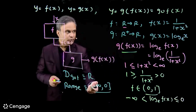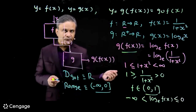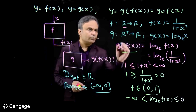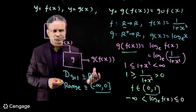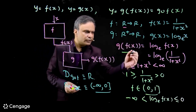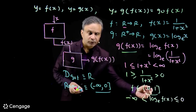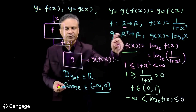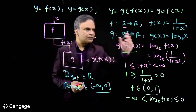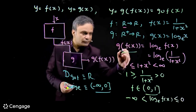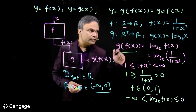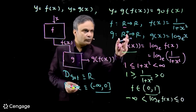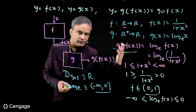So the range of goff is a subset of the range of g(x). This is because the set of input values to this function is a subset of the domain of g. The domain of g is R⁺, but for this composite function the input values form the set (0, 1], which is a subset of R⁺. So naturally the range of this function is a subset of the range of g.